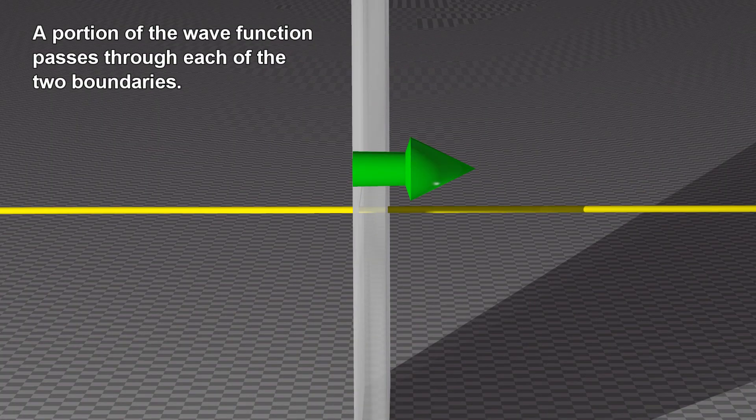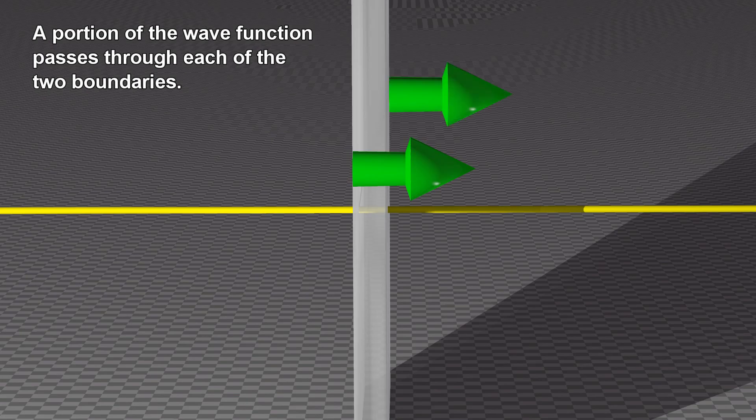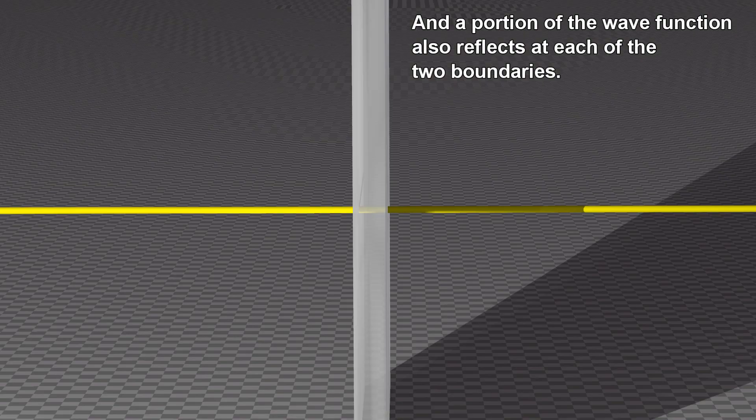A portion of the wave function passes through each of the two boundaries, and a portion of the wave function also reflects at each of the two boundaries.